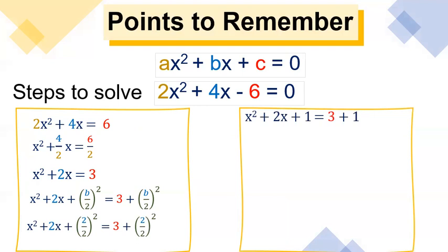Let's factor x squared plus 2x plus 1, and that gives us the quantity of (x + 1) squared, and we added 3 plus 1 to get 4 as our answer. To remove the square, let's extract it by getting the roots of both sides.